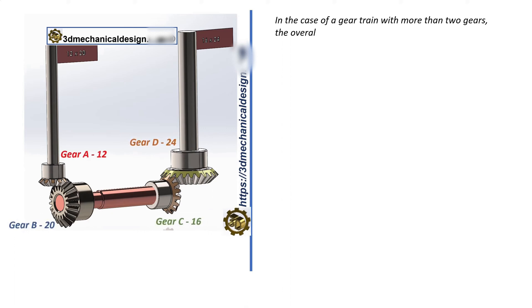In the case of a gear train with more than two gears, the overall gear ratio is the product of the individual gear ratios.